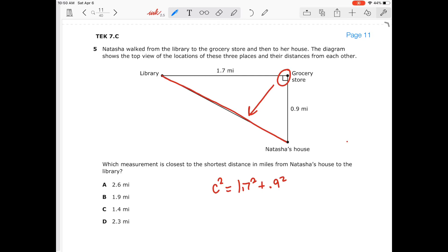And we are looking for our hypotenuse, which is C squared. So C squared is going to be equal to 1.7 squared plus 0.9 squared. All right, so let's put this in. So 1.7 squared, plus 0.9 squared.